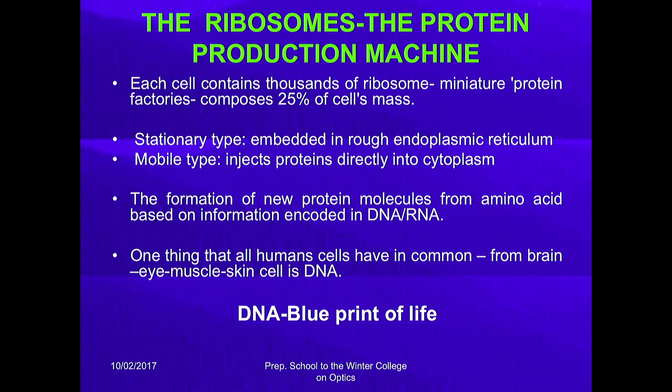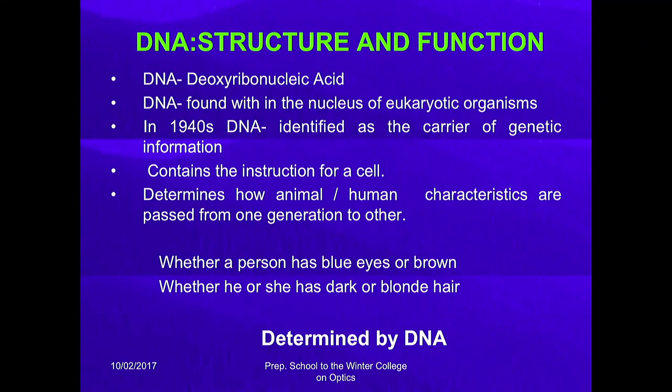One thing all human cells have in common — from brain, eye, muscle, to skin — is that they contain DNA, called the blueprint of life. DNA stands for deoxyribonucleic acid. 'Deoxy' means it lacks one oxygen. DNA is found within the nucleus of eukaryotic organisms, and in the 1940s DNA was identified as the carrier of genetic information. It contains the instructions for a cell and determines how animal and human characteristics are passed from one generation to another — whether a person has blue or brown eyes is determined by DNA.